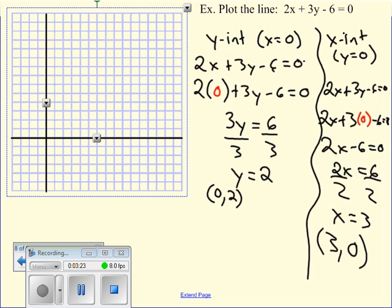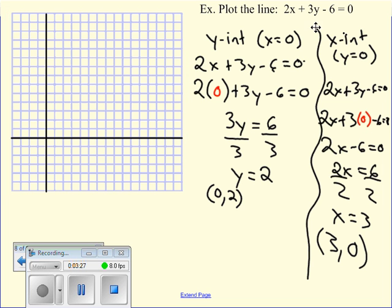So I can just take those two points. So zero and two, go up to two, right there. And then three and zero, which is right here. And draw a line through. Great. So that's how I can get my line from those two points.